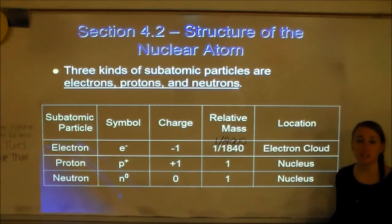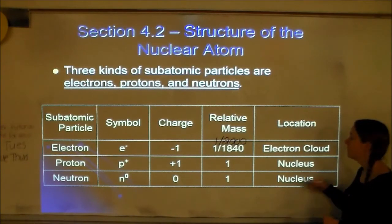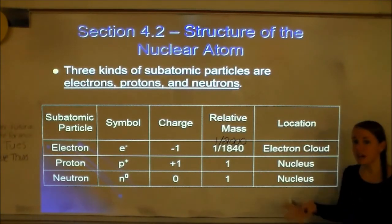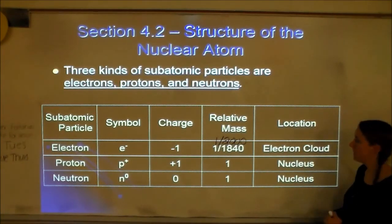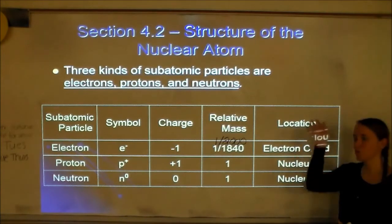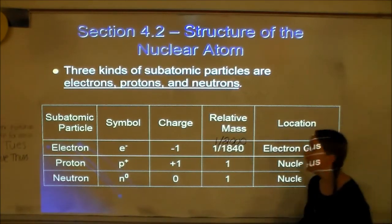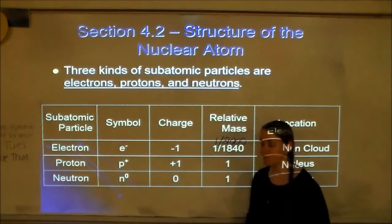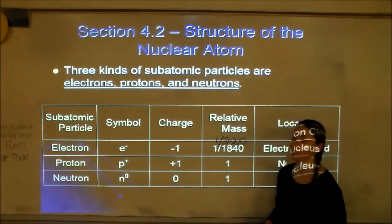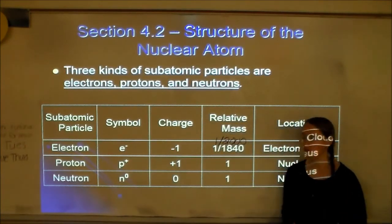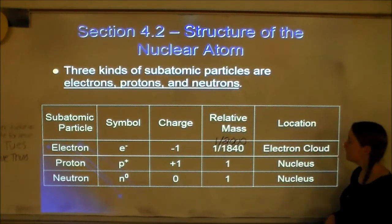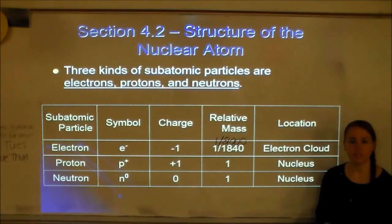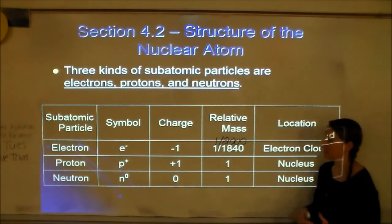Some people say energy levels for the electron's location. Anything is fine as long as it's outside of the nucleus, because electrons are the ones found outside the nucleus. Next is the proton. The symbol is P+, because it has a +1 charge, and the relative mass is 1. The location is the nucleus — protons are inside the nucleus.